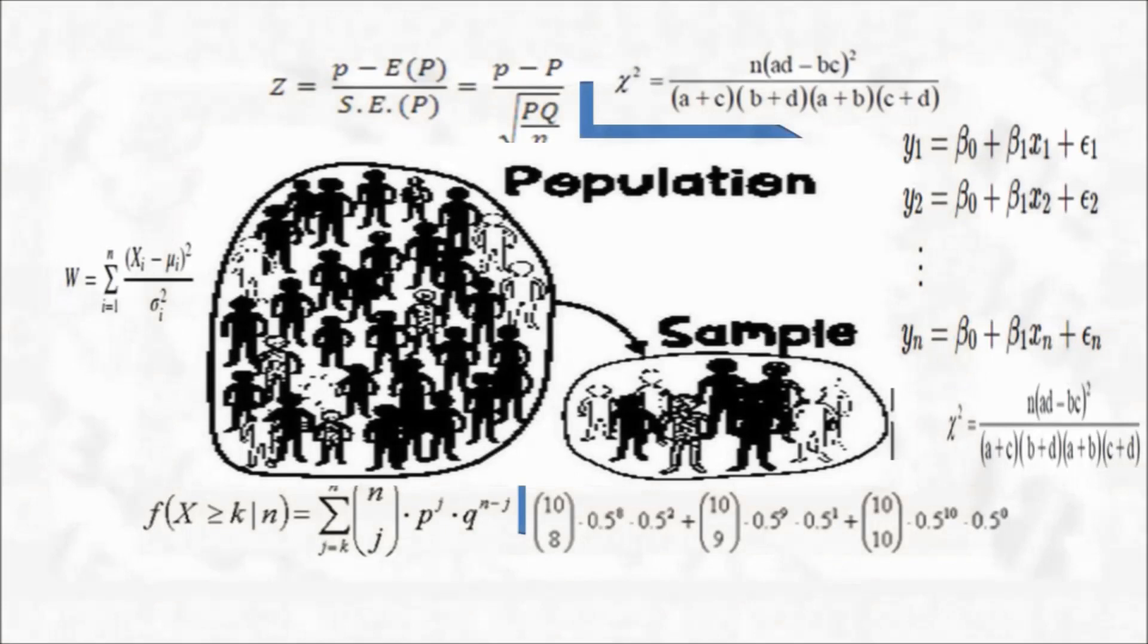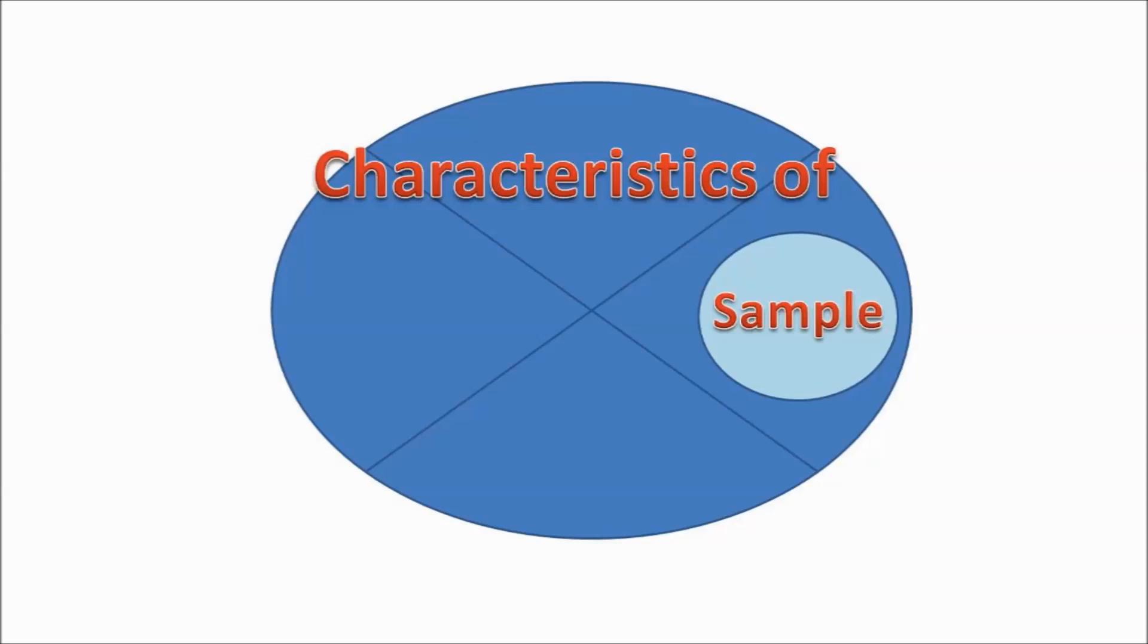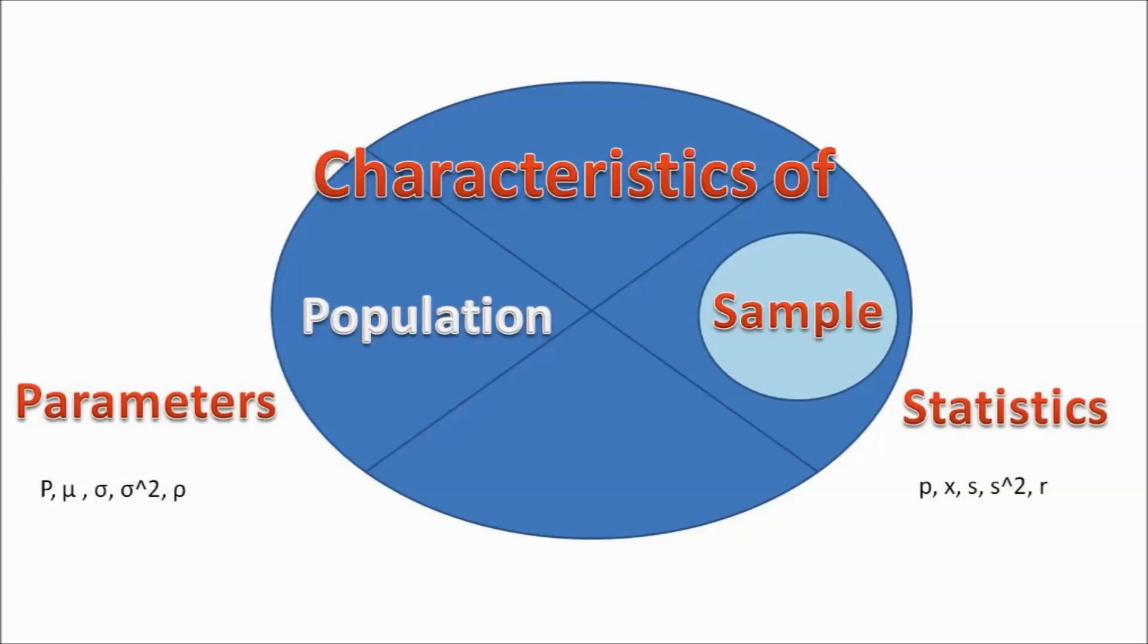We use statistical techniques on the samples of the population, but the aim is largely to understand the population. In other words, on the basis of characteristics of a sample, we try to get at the characteristics of a population. To distinguish our reference to characteristics of a sample from that of a population, we refer to characteristics of sample as statistics and that of population by parameters.